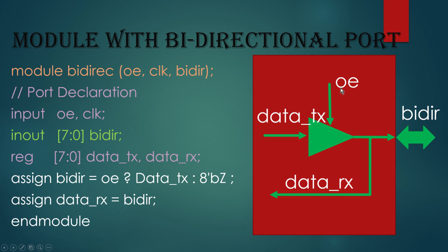If this enable signal will be high, DataTx will be passed to this bi-directional port. If this enable signal is zero, this will be in a high impedance state. And DataRx will always be equal to bi-directional port.